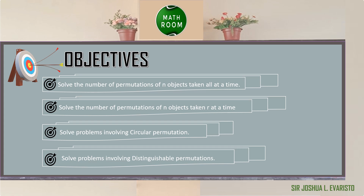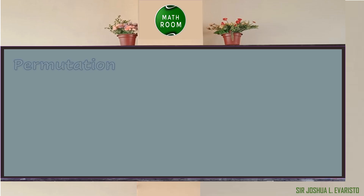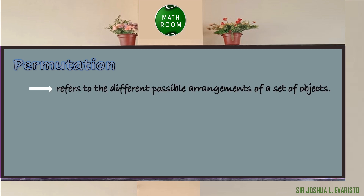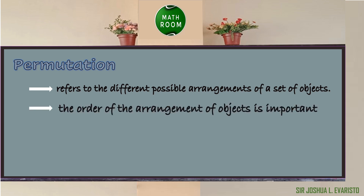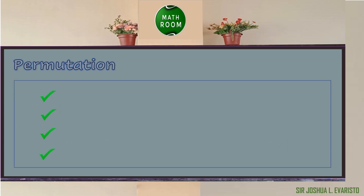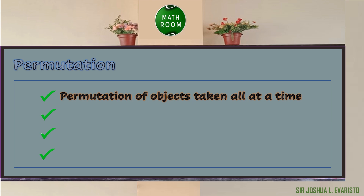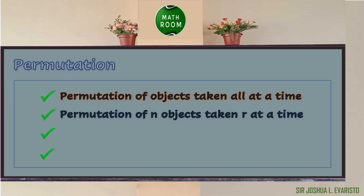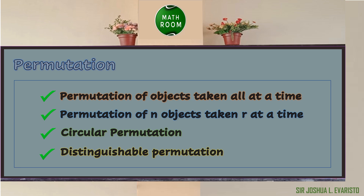Solve problems involving distinguishable permutations. Let's get started. On our previous lesson, we already defined permutation. Permutation refers to the different possible arrangements of a set of objects. The order of the arrangement is important — hence the arrangement A, B, C, D is not the same as the arrangement B, C, D, A. For this lesson we're going to solve the different problems involving permutation of objects taken all at a time, permutation of n objects taken r at a time, circular permutation, and distinguishable permutation.